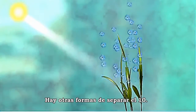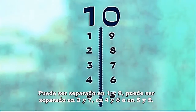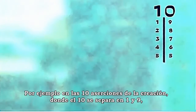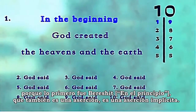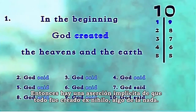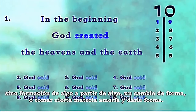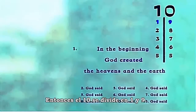There are other ways to split ten. Ten can be split into one and nine, three and seven, four and six, or five and five. In the Torah we find all possible splittings of ten. For instance, in the ten sayings of creation, the ten are split into one and nine, because the first one — Bereishit — is an implicit saying. There is one implicit saying that everything was created ex nihilo, and the other nine explicit sayings are not creation ex nihilo according to Rashi, but just formation — changing a form or taking amorphous matter and giving it form. So the ten sayings split into one and nine.